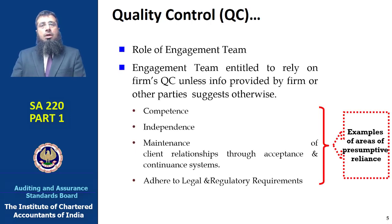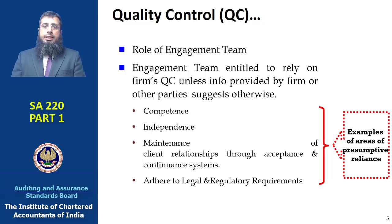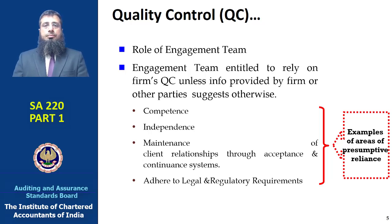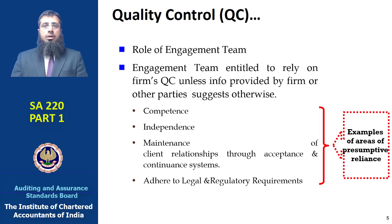Coming to the role of the engagement team: the engagement team can presuppose or rely on the firm's quality control system, unless they have information suggesting they should not. The standard gives certain areas where quality control can be presumed by the engagement team: the competence of individuals around them, that those people are independent to the audit engagement, that the firm has maintained client relationships through acceptance and continuing systems, and that the firm adheres to legal and regulatory requirements.